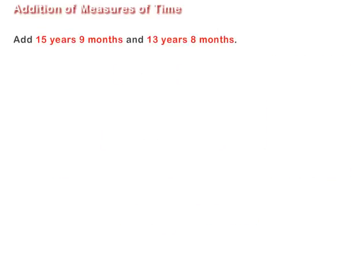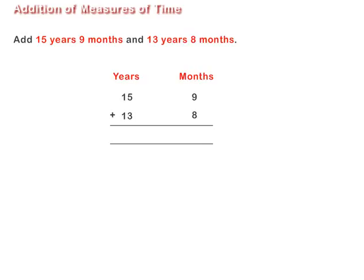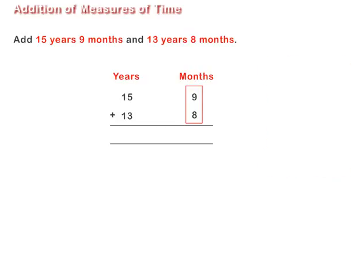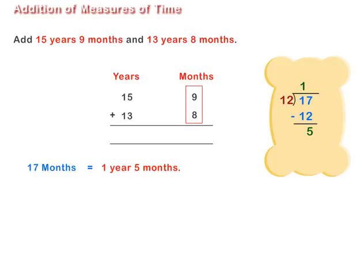Lastly, let us add 15 years 9 months and 13 years 8 months. Arrange 15 years 9 months and 13 years 8 months in columns as shown on screen. Add 9 months and 8 months, that is, 17 months. Convert 17 months into years and months, which is equal to 1 year 5 months.